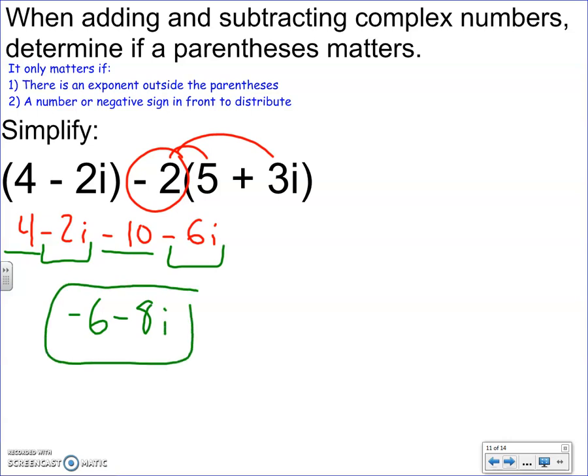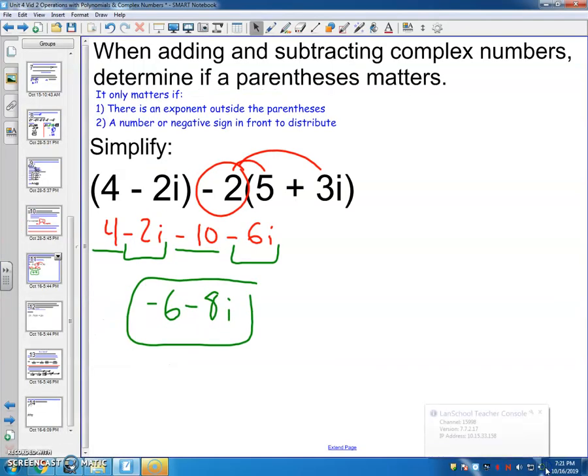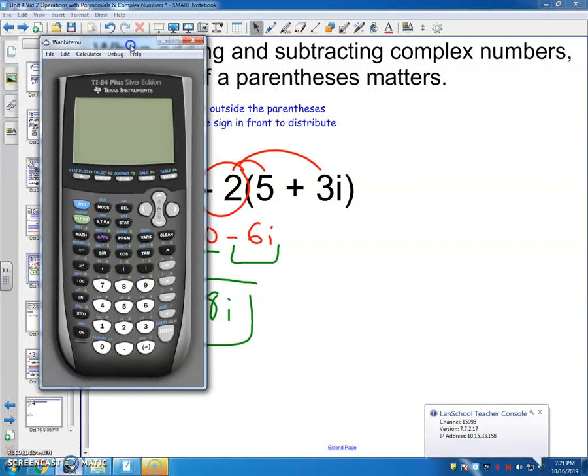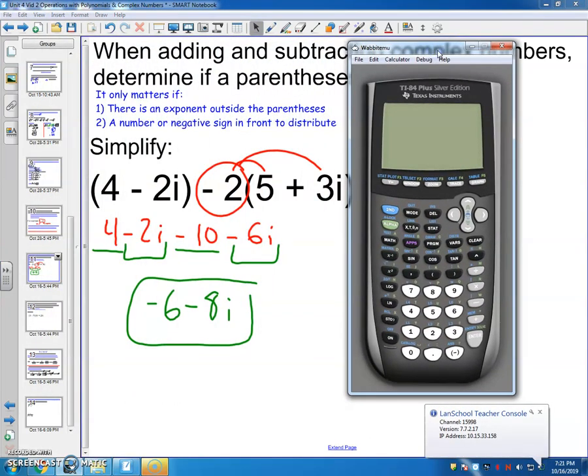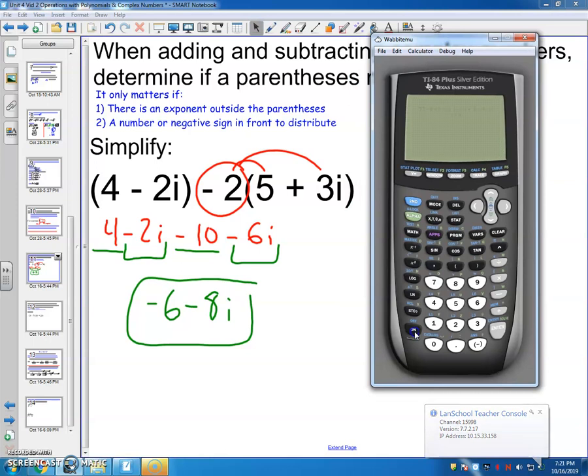I does not have an exponent, so we're good. I do want to show you that the calculator can do this if you have a calculator, which on certain tests you can. So I'm going to write parentheses. 4 minus 2I is second period. Close parentheses. Minus 2 parentheses 5 plus 3 second period. And it gives me negative 6 minus 8I. Same answer I got.